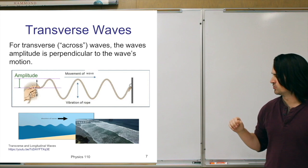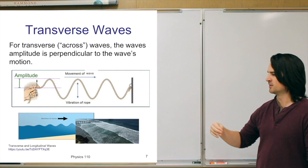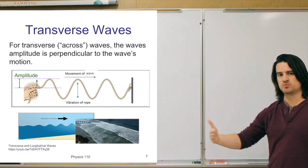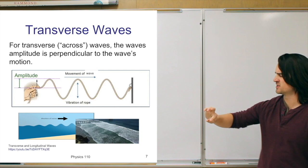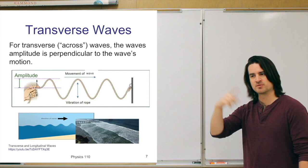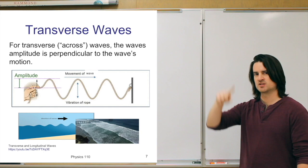Another example of transverse waves is ocean waves. It's not a bit of water that started way out and moved all the way in — the water itself is really just moving up and down while the ocean wave moves toward shore. It's a little more complicated because the water motion is also somewhat circular, but the water molecules are not really moving in the direction the wave travels; they're moving essentially perpendicular to it.